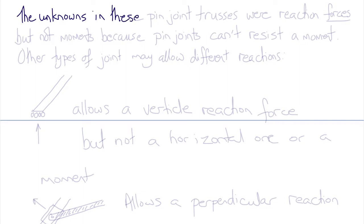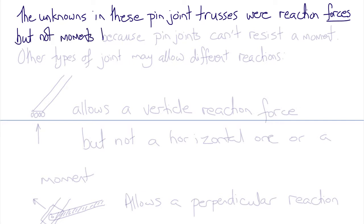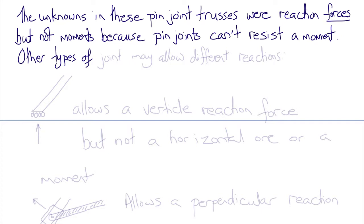In these pin-jointed trusses, the unknowns were reaction forces but not moments, because pin-joints can't resist a moment. In that way they're similar to joints in our body that require the actions of muscles to keep them stable. Different types of joint or constraint allow different kinds of reactions.